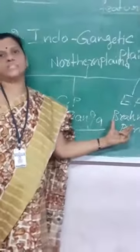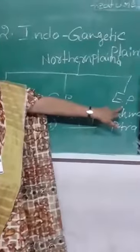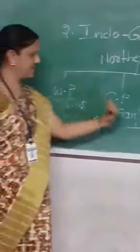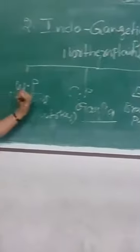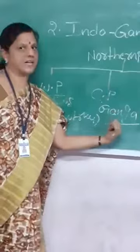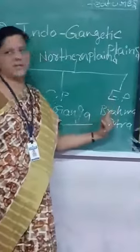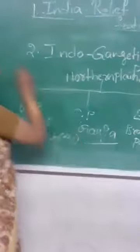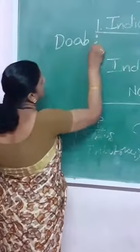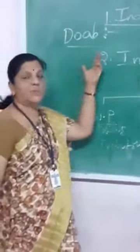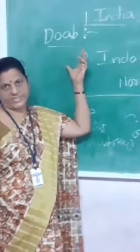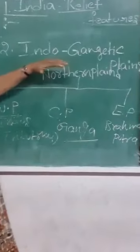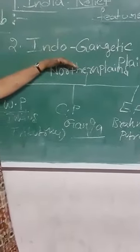The Brahmaputra River is the main factor responsible for the formation of the Eastern Part. So, to summarize the Indo-Gangetic Plains: Western Part — Indus and its tributaries; Central Part — Ganga and its tributaries; Eastern Part — Brahmaputra River. One more important term: the fertile land between two rivers is called a Doab.